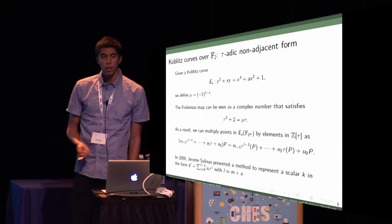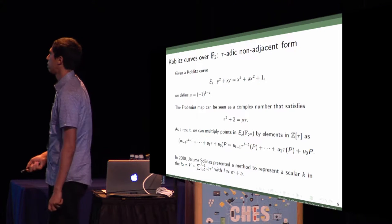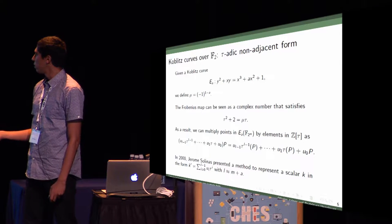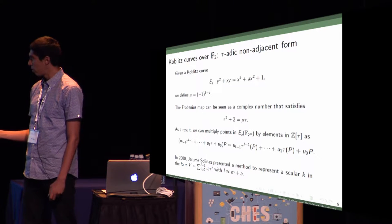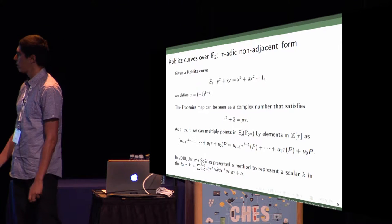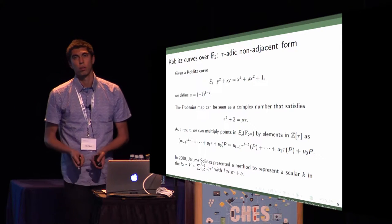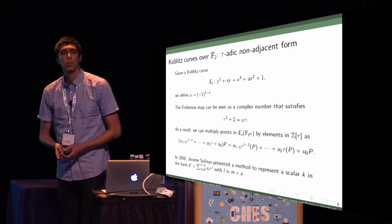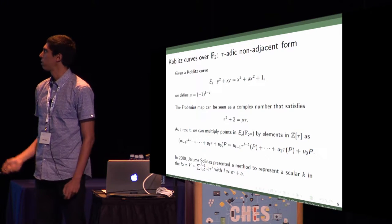In 2000, Jerome Solinas presented a method to represent the scalar k in this form. It's a very efficient representation where L is approximately M divided by A. That way we could devise very fast methods for computing scalar multiplication using Koblitz curves.